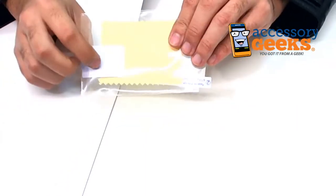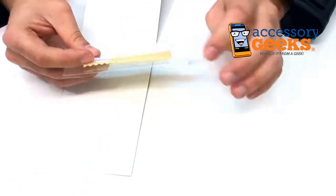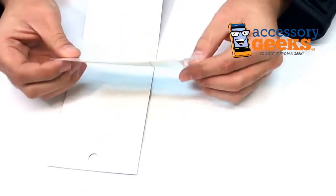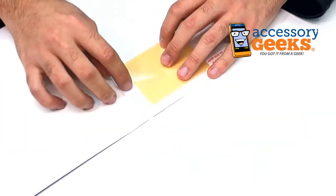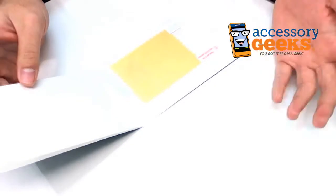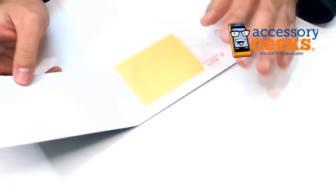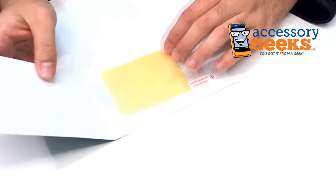And then this little doohickey right here, which is an applicator card. This one's made out of plastic, which are better than the cardboard ones. But if you don't like using that or you feel like that's not enough grip, you can always use like a credit card or something credit card shaped but made of plastic.